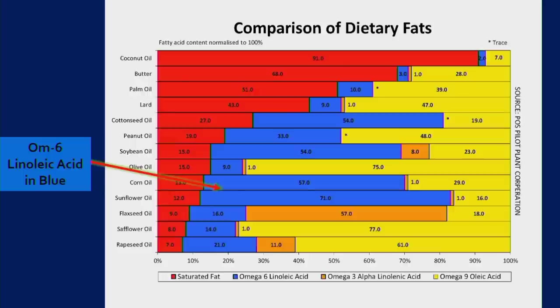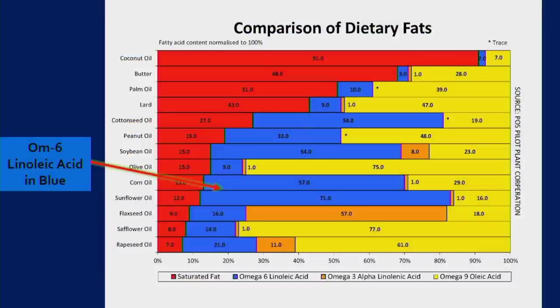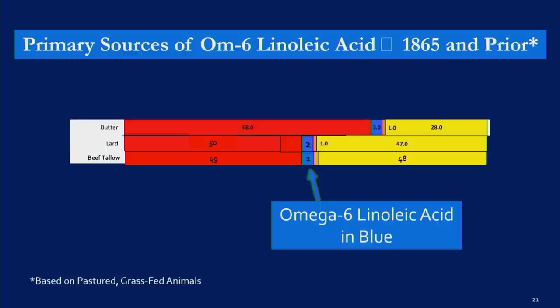The top four fats — coconut oil, butter, palm, and lard — are great fats. All the red is saturated fat; that's what we want. If you go back to 1865 and for all of history prior, our sources of fat were butter, lard, and beef tallow, with approximately 2–3% linoleic acid based on grass-fed animals. Here's what we should be getting — and here's the enormous amount of omega-6 we're actually getting today.